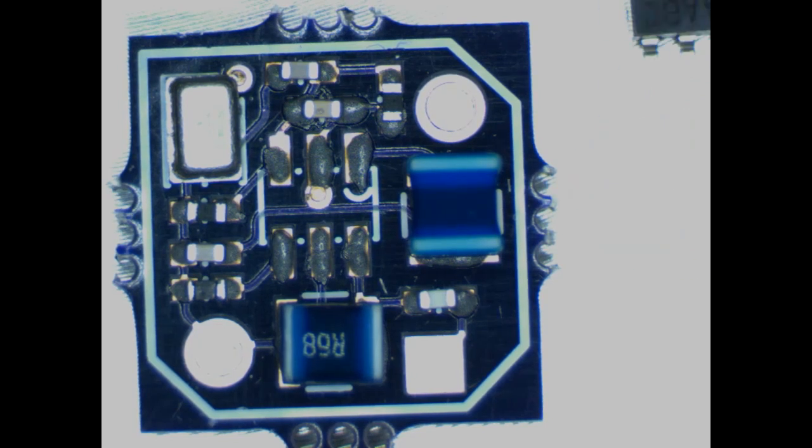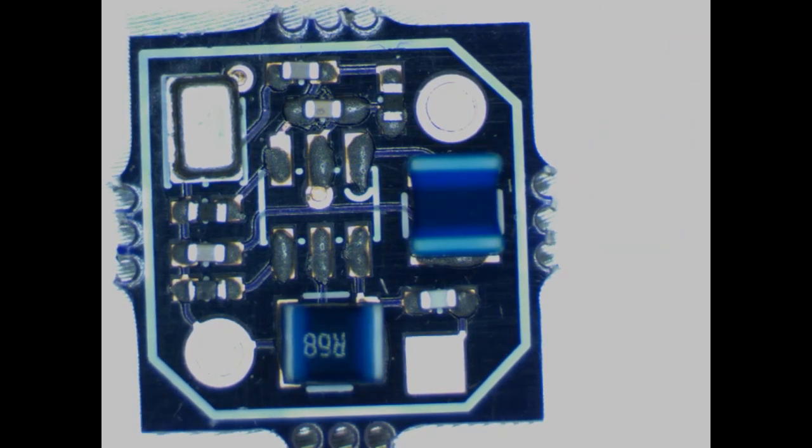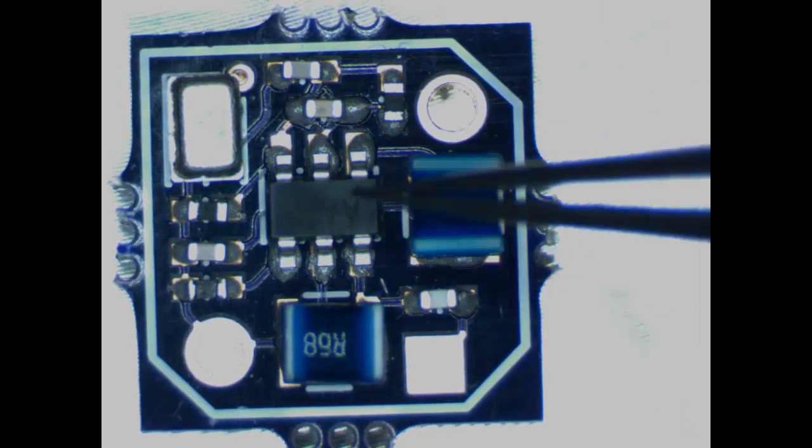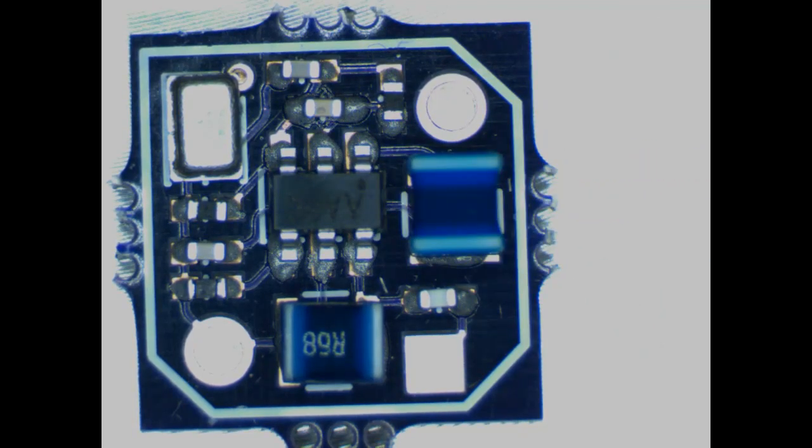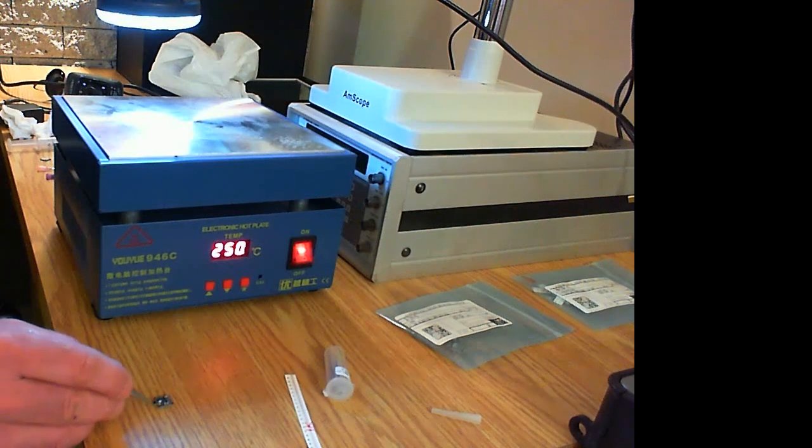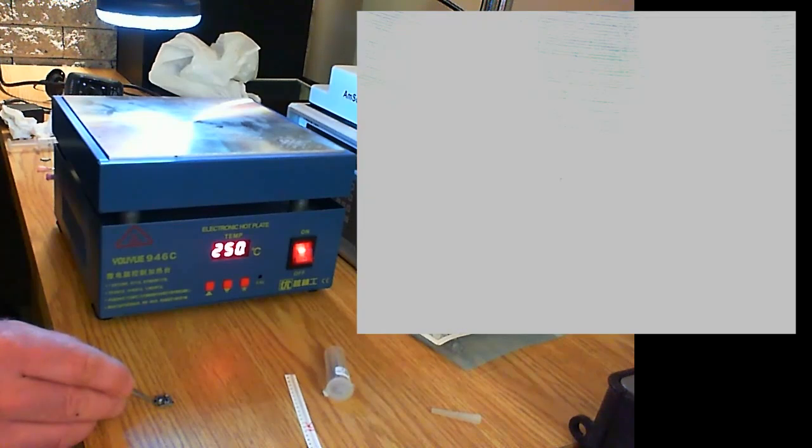Last but not least, the IC. Here, the Max 2606. I heat the hot plate up to 250 degrees Celsius and wait for the solder paste to melt.